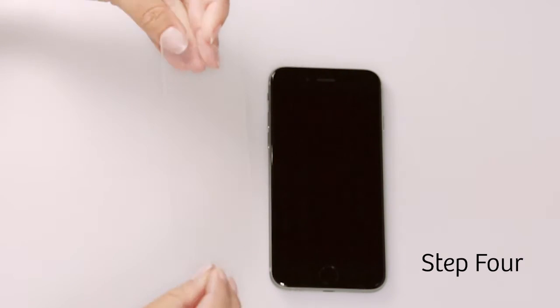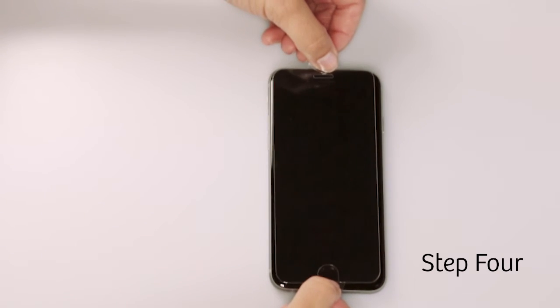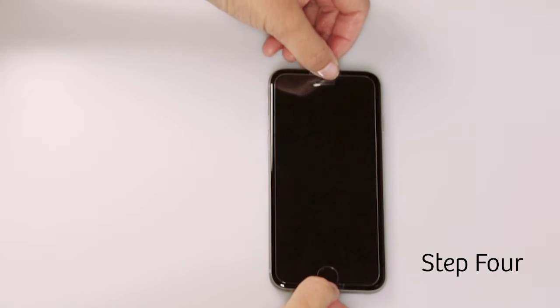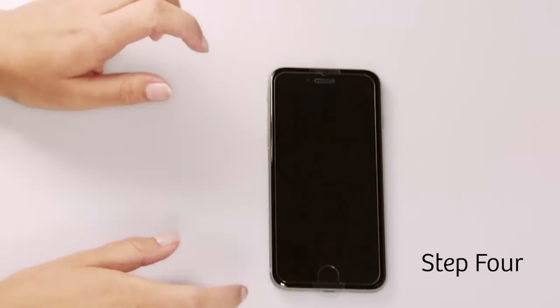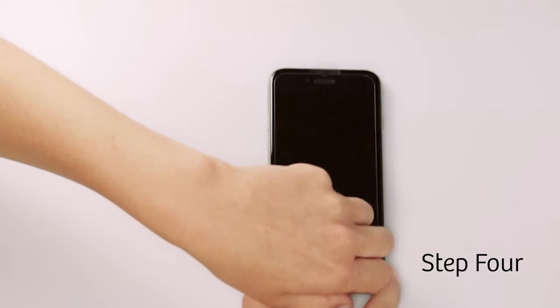Step four: align the glass protector with your device by holding the easy apply applicator. Press and hold down on the center of the glass with your finger, then peel off the easy apply applicator.